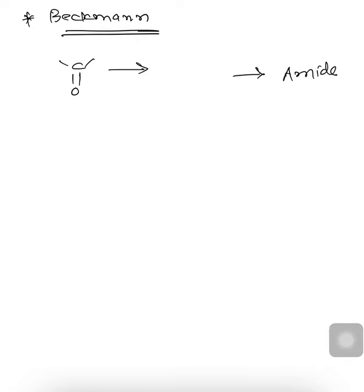Beckmann rearrangement is generally used for the conversion of any ketone molecule to substituted amide derivatives, via an intermediate oxime. So the ketone is first converted to an oxime, and the oxime in presence of H2SO4 is used to convert it into a substituted amide. We will discuss the mechanism part first; let us consider one example: Ph-C(=O)-CH3.